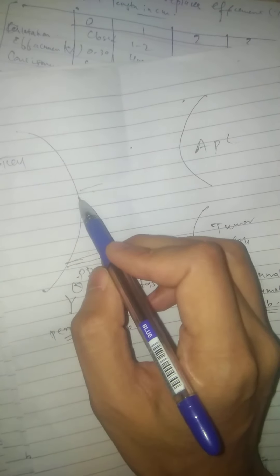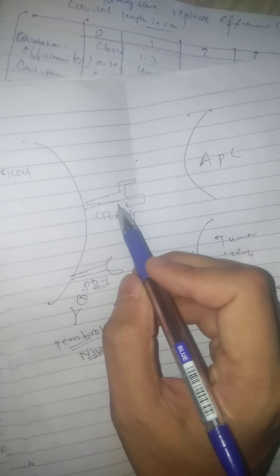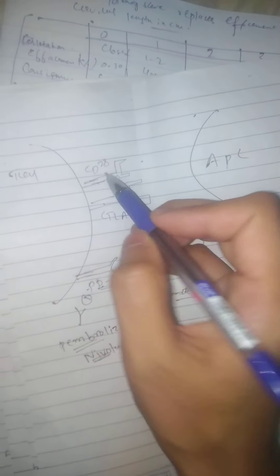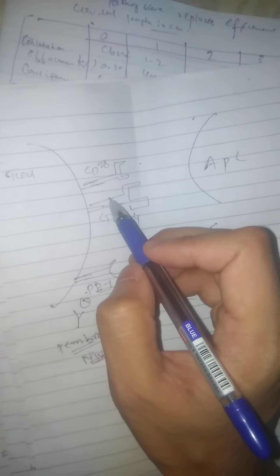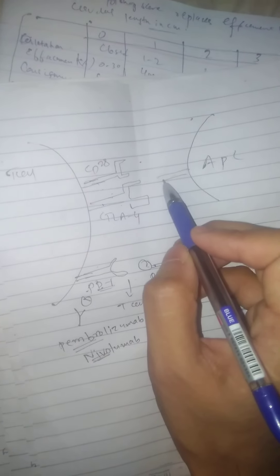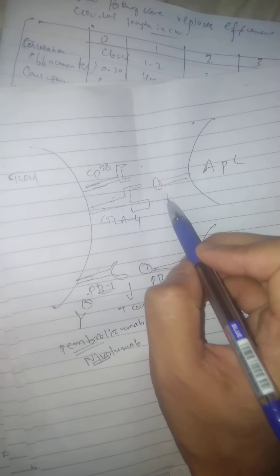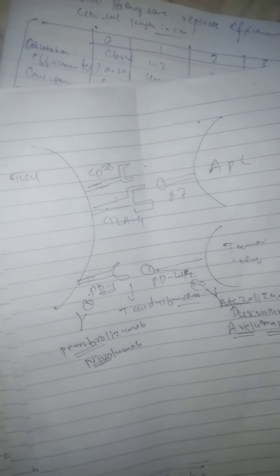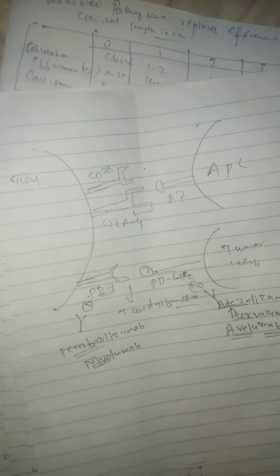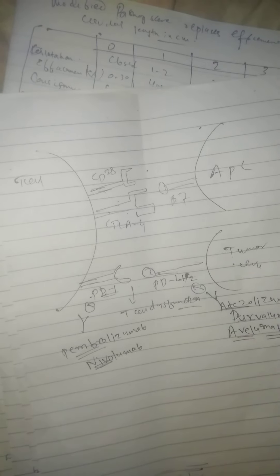Now let's look at CTLA-4 on T cells. CTLA-4 outcompetes CD28 for B7 on antigen presenting cells. When CTLA-4 binds B7, there is a loss of the T cell co-stimulatory signal.